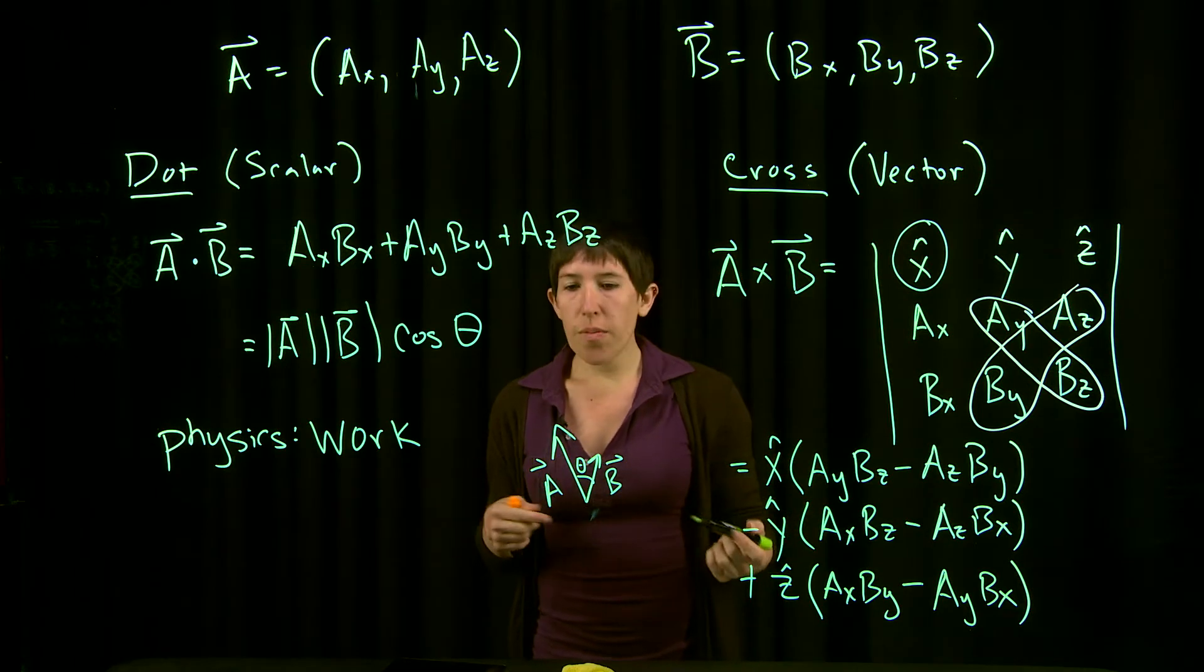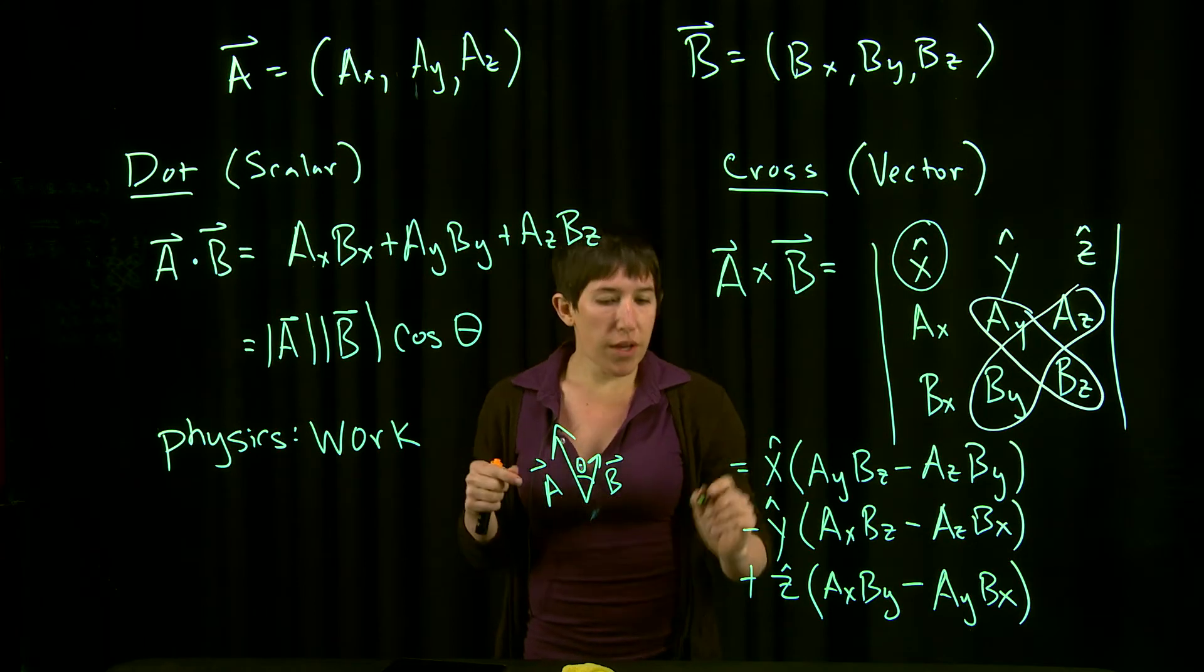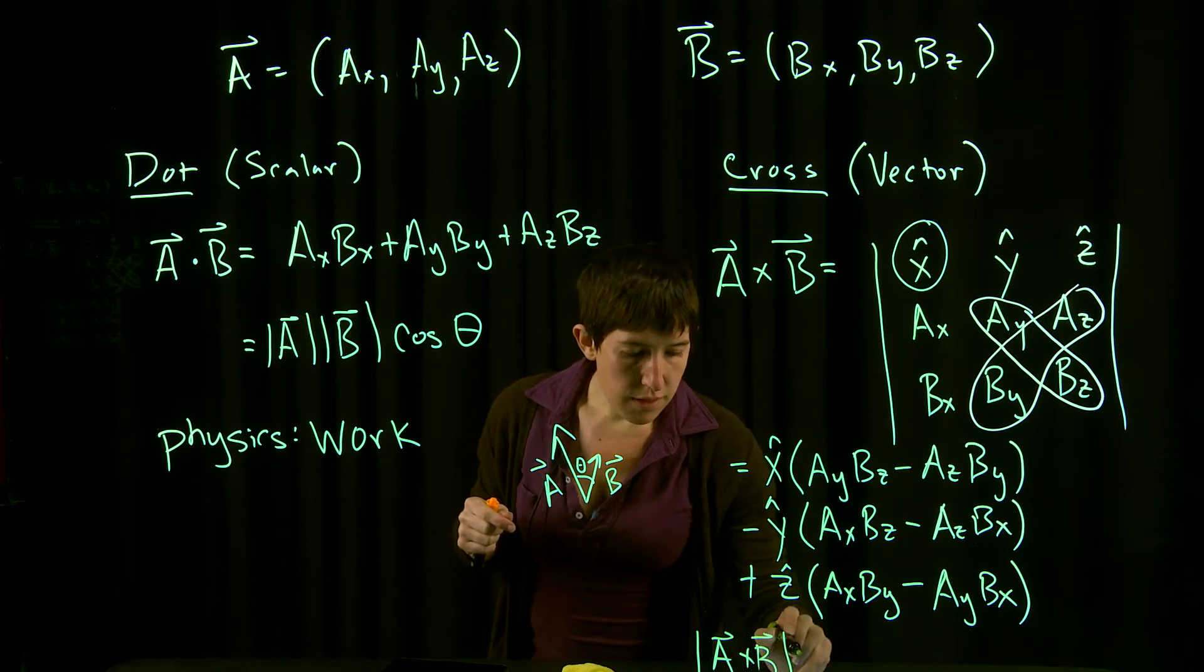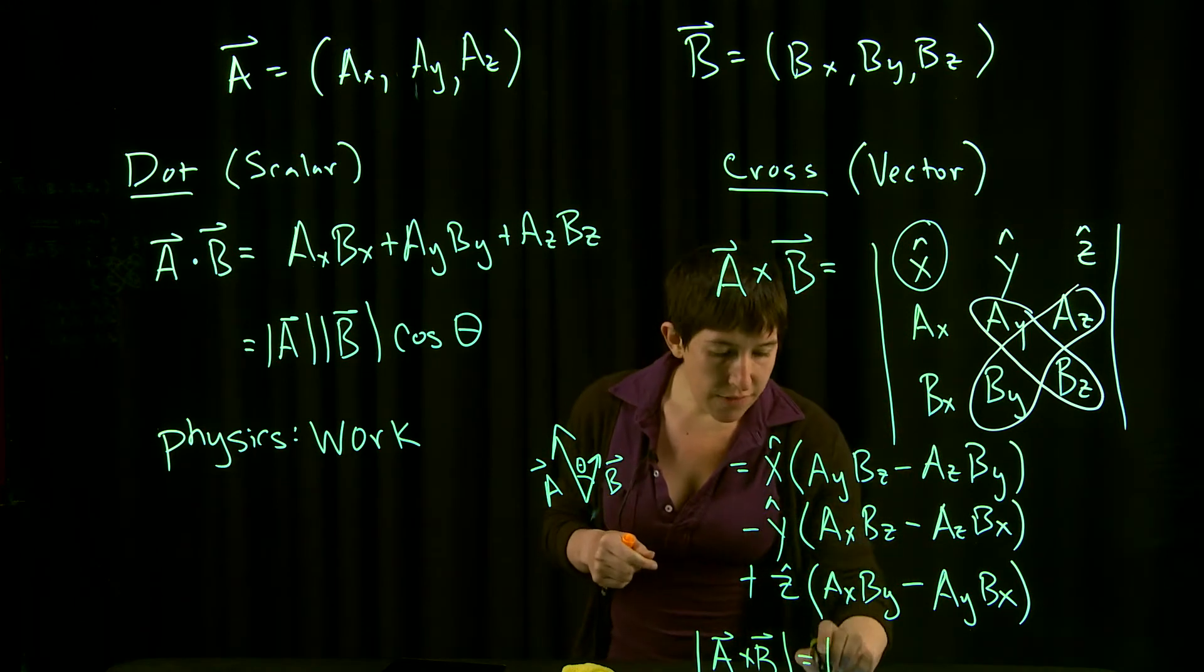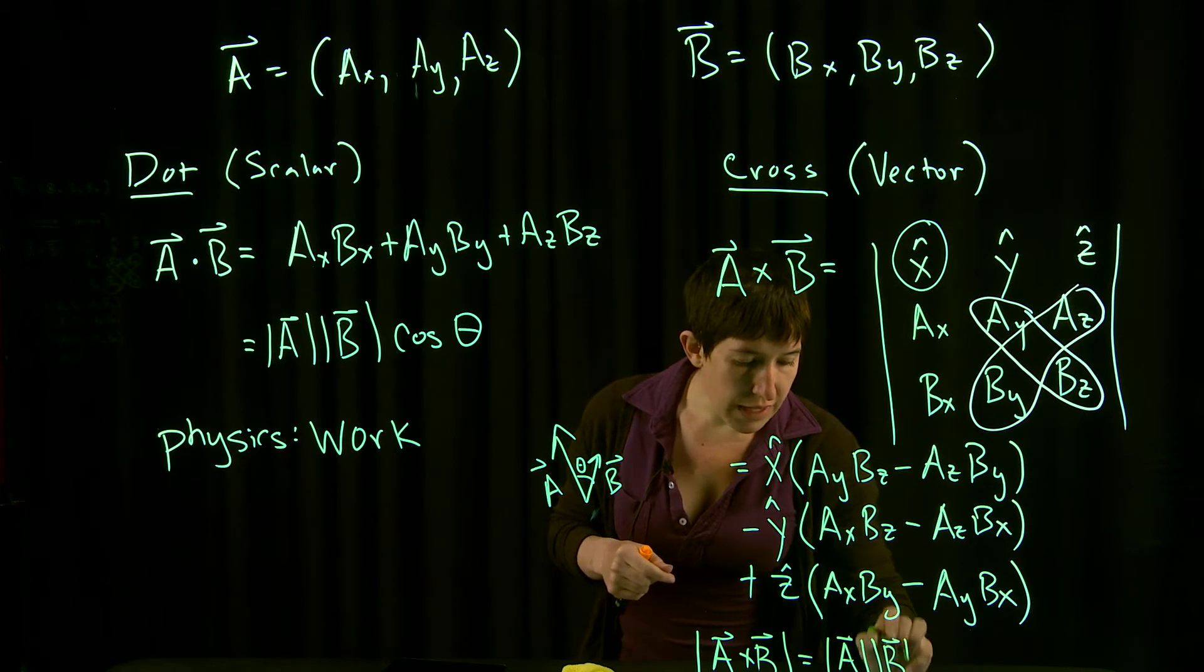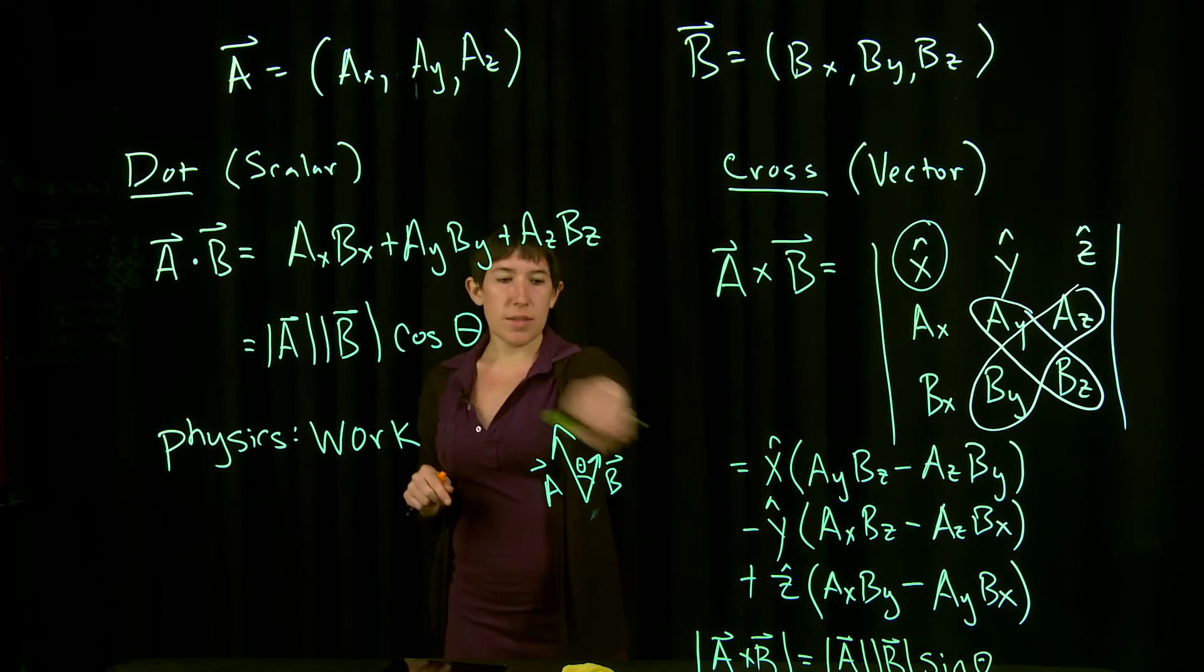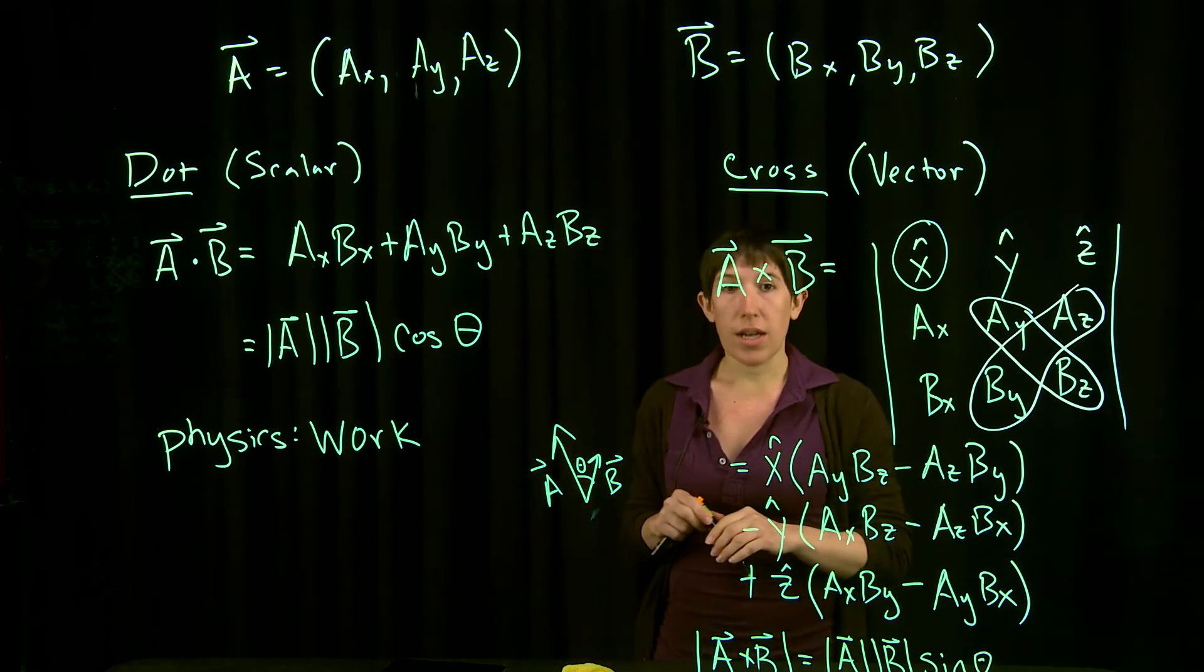You might be given the magnitude and direction of vectors but not their components. So you could compute the magnitude of A cross B. This is given by |A| times |B| times sin(θ), where θ is the angle between the two vectors. The difference between the magnitudes is you get cosine for the dot product and sine for the cross product.